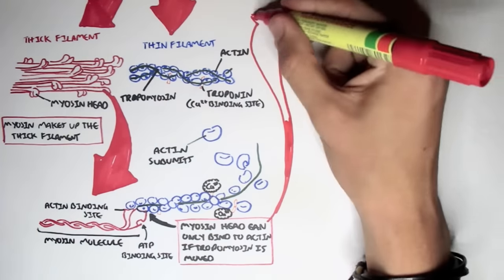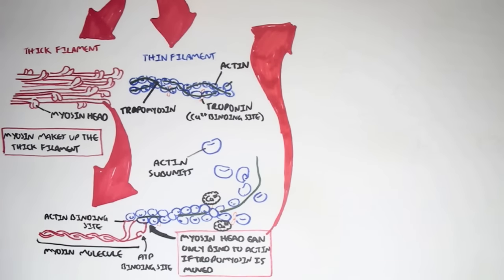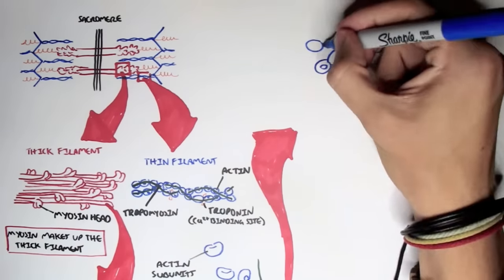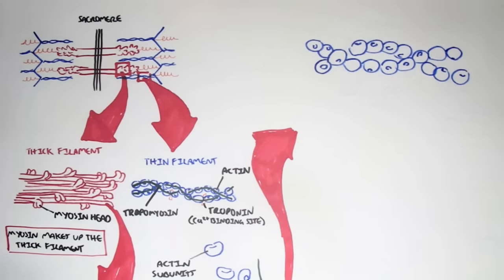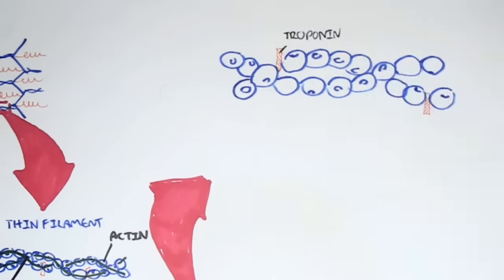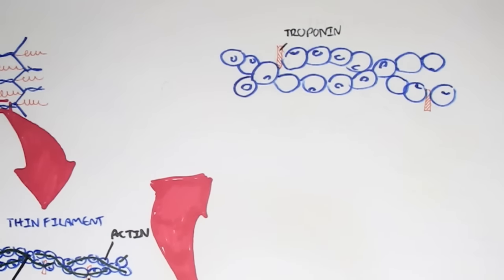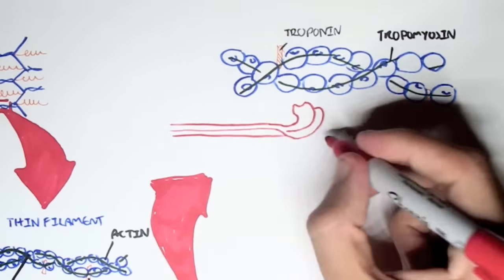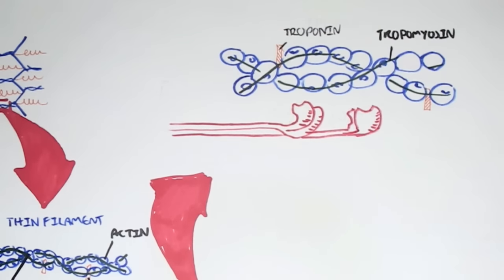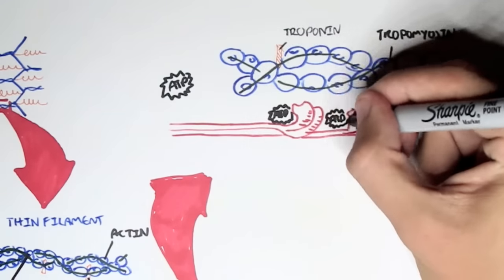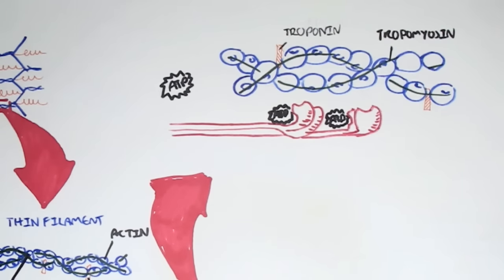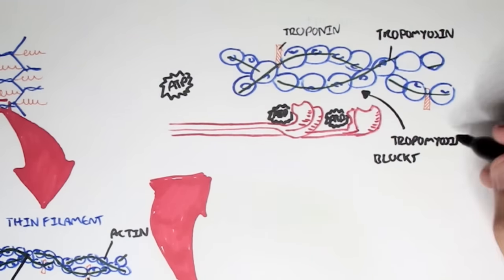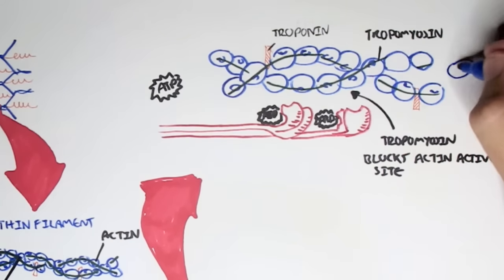Myosin heads can only bind to actin if tropomyosin is moved. Here we have the thin filaments consisting of many actin subunits, with troponin in orange. Tropomyosin is blocking the binding of myosin onto actin. When ATP comes on, it will bind onto the ATP binding site of the myosin, causing myosin to want to bind to actin subunits — but it can't because tropomyosin blocks the actin's binding site, preventing the binding of myosin heads onto actin subunits.